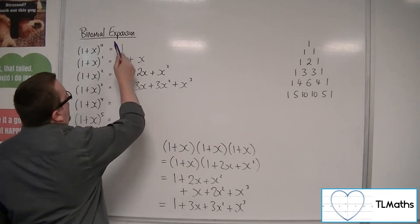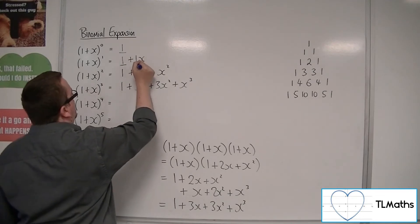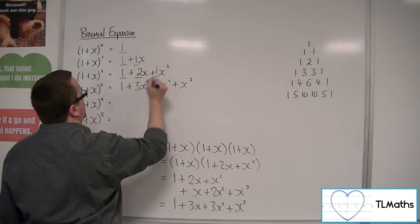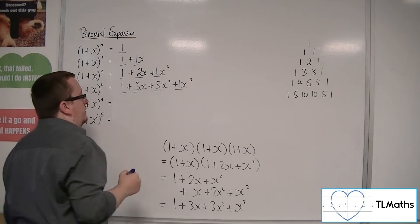Because hopefully you're spotting that the coefficients that are in the expansion are precisely the numbers that are in Pascal's triangle. We have 1, we've got 1, 1, okay? We've got 1, 2, 1, we've got 1, 3, 3, 1, okay?